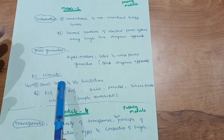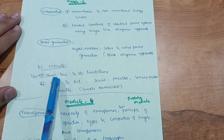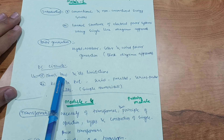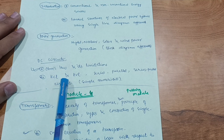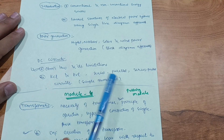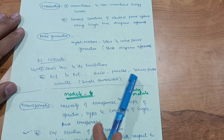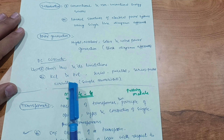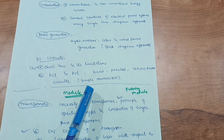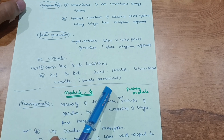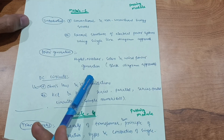The third part is the easier and most important one, covering DC circuits like Ohm's law and its limitations, which is a very important question. You also need to cover KCL (Kirchhoff's Current Law), KVL (Kirchhoff's Voltage Law), and series, parallel, and combination circuits. Simple numericals are there, which you may have already come across in 12th class. These are the contents of Module 1.